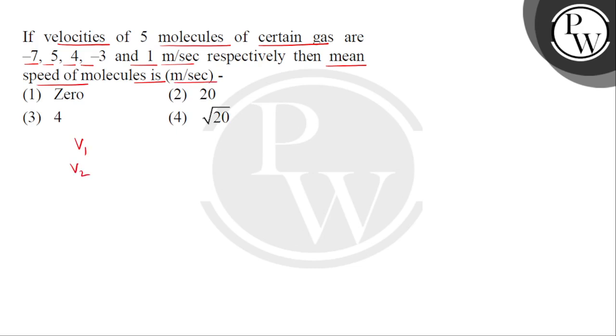Given that we have 5 molecules of a certain gas with velocities: V1 is minus 7 meter per second, V2 is 5 meter per second, V3 is 4 meter per second, V4 is minus 3 meter per second, and V5 is 1 meter per second. We have to find the mean speed of this gas.